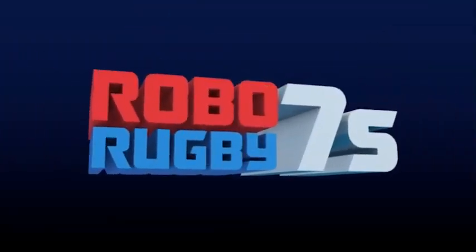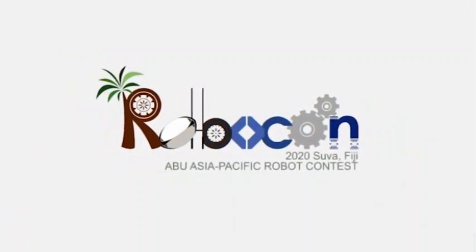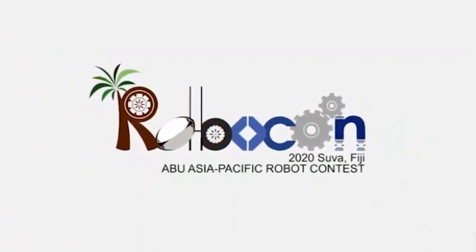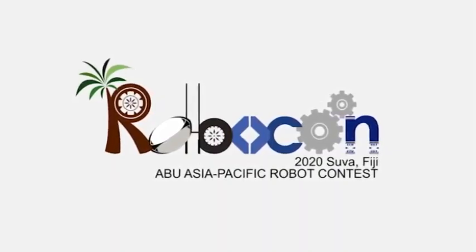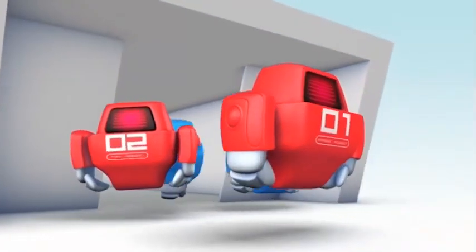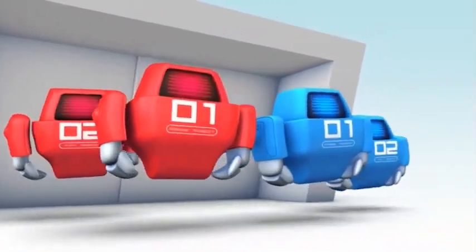ABU Robocon 2020 SUVA is designed to promote the idea of Rugby Sevens. Roborugby rules are motivated from World Rugby. The game takes place between two teams, the red and the blue team.